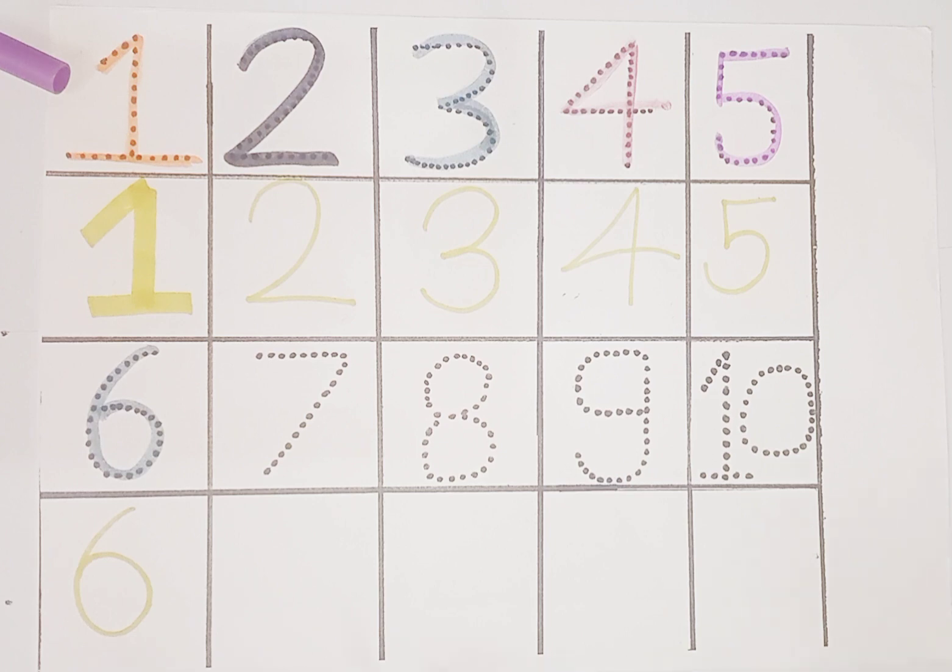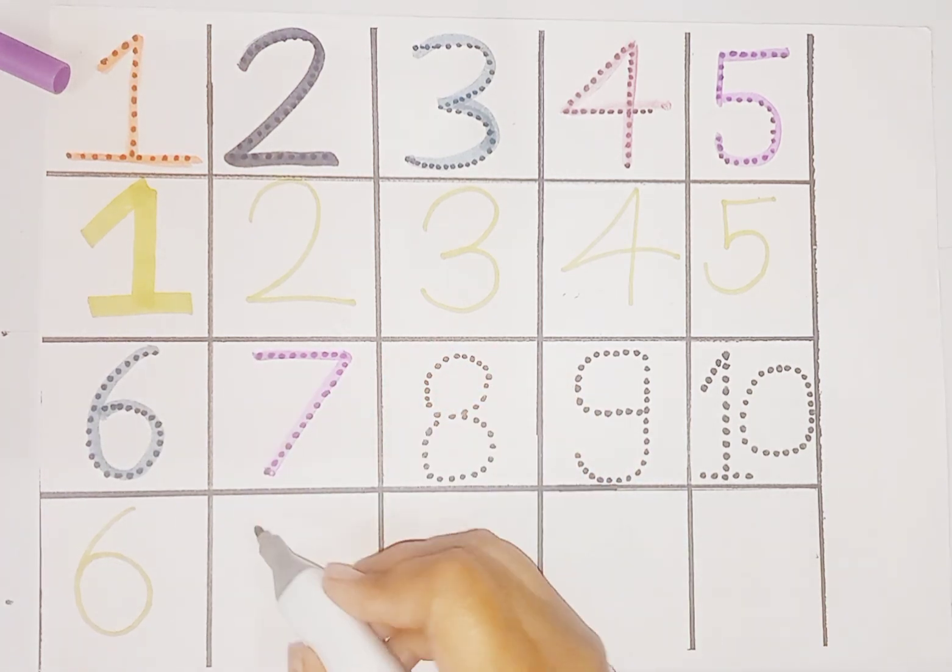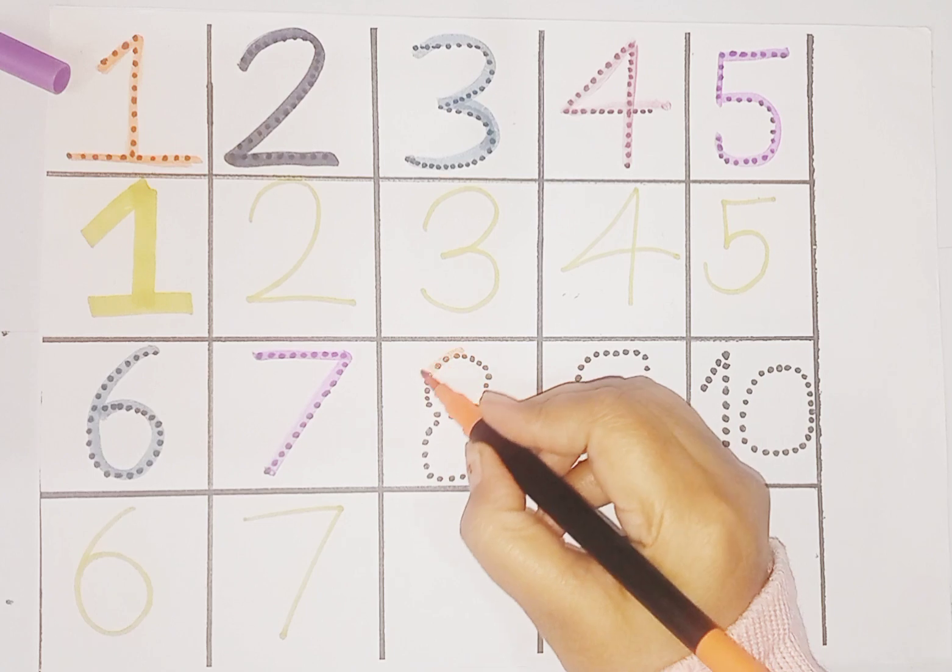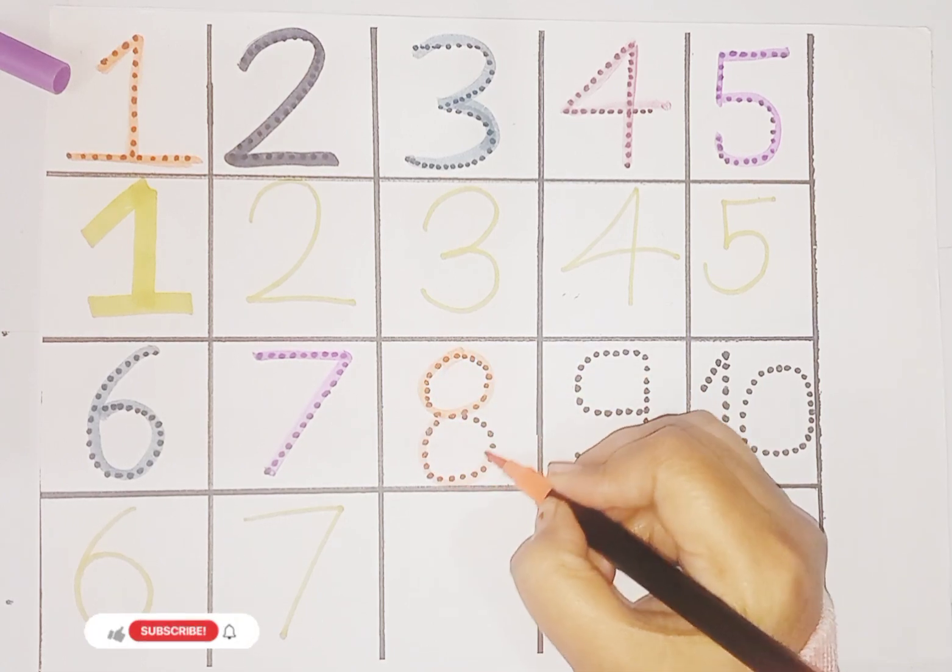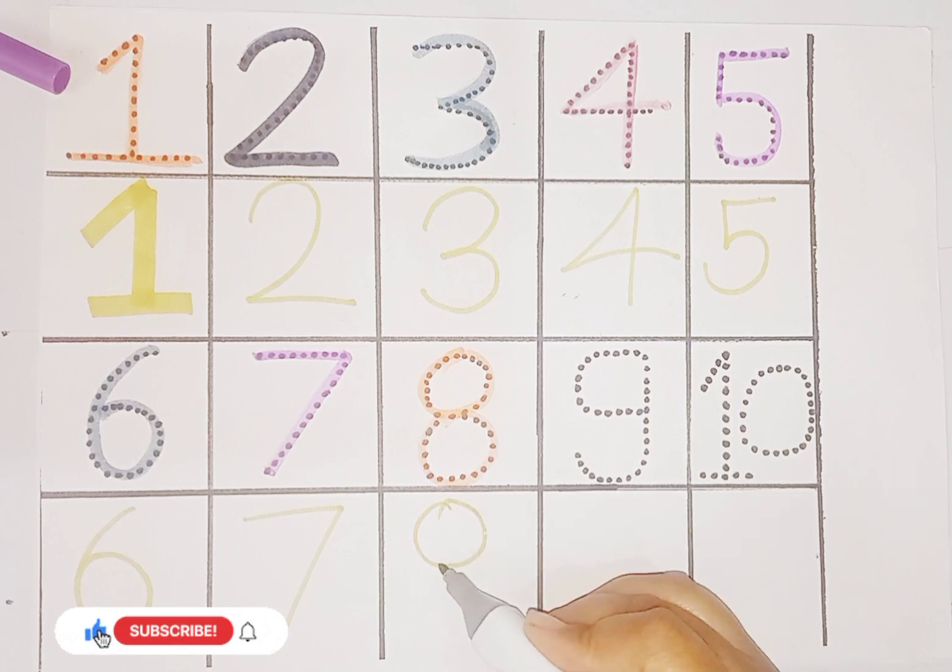Next is number 7 and number 7 is here. Next is number 8. This is number 8 and number 8 is here.